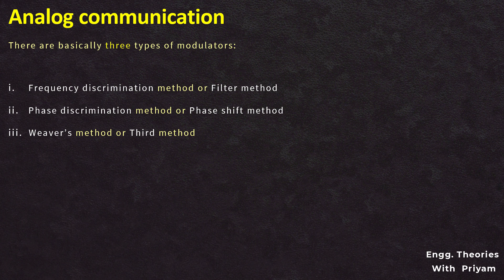This method was invented by Dr. D.K. Weaver in 1950. It avoids the need for wideband phase shifters, which are difficult to construct and expensive, and instead uses an AF subcarrier at an audio frequency for the generation of the SSBSC modulated signal. This method has the advantage of the phase shift method, such as availability to generate SSBSC at any frequency. It uses low audio frequencies without the associated disadvantage of an audio frequency phase shift network required to operate over a large range of audio frequencies.